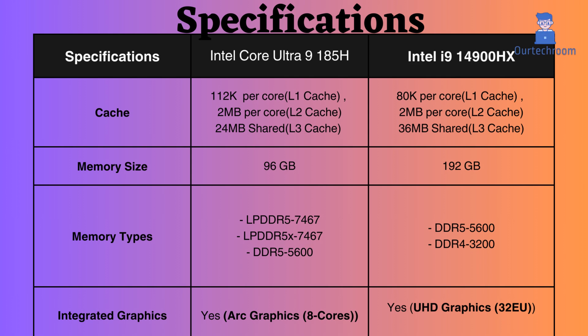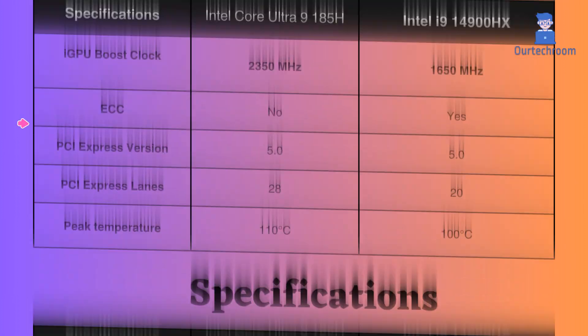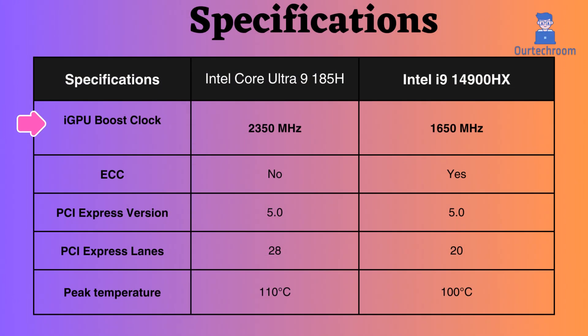The Intel Core Ultra supports Arc graphics with 8-core integrated graphics, which is better than the UHD graphics of the Intel i9. Additionally, the boost clock frequency of the Arc graphics 8 is higher.